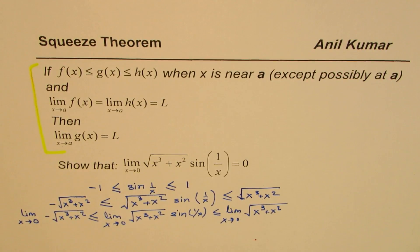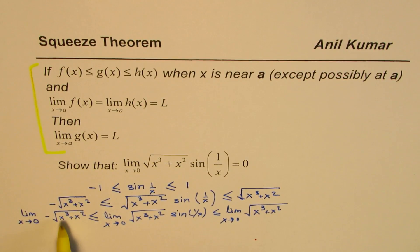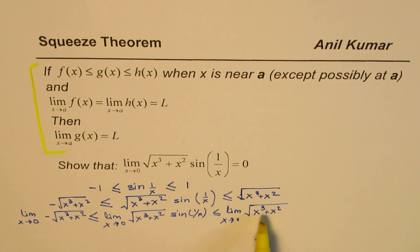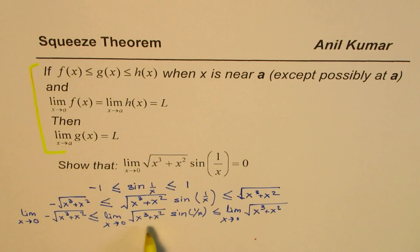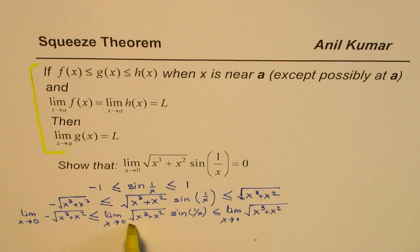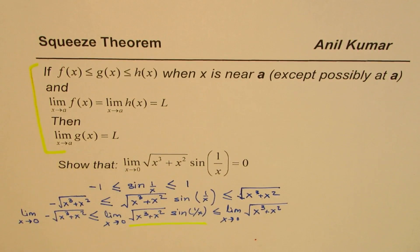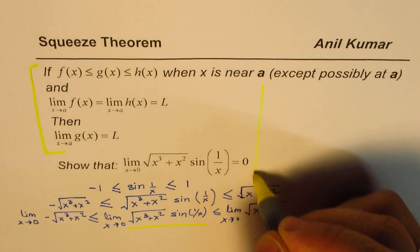Now if I prove that the limits of the functions on the left side and on the right side are both 0, then using the squeeze theorem we can say that the limit of the function right there in the center should also be 0. That's the concept. So let's prove that part now.